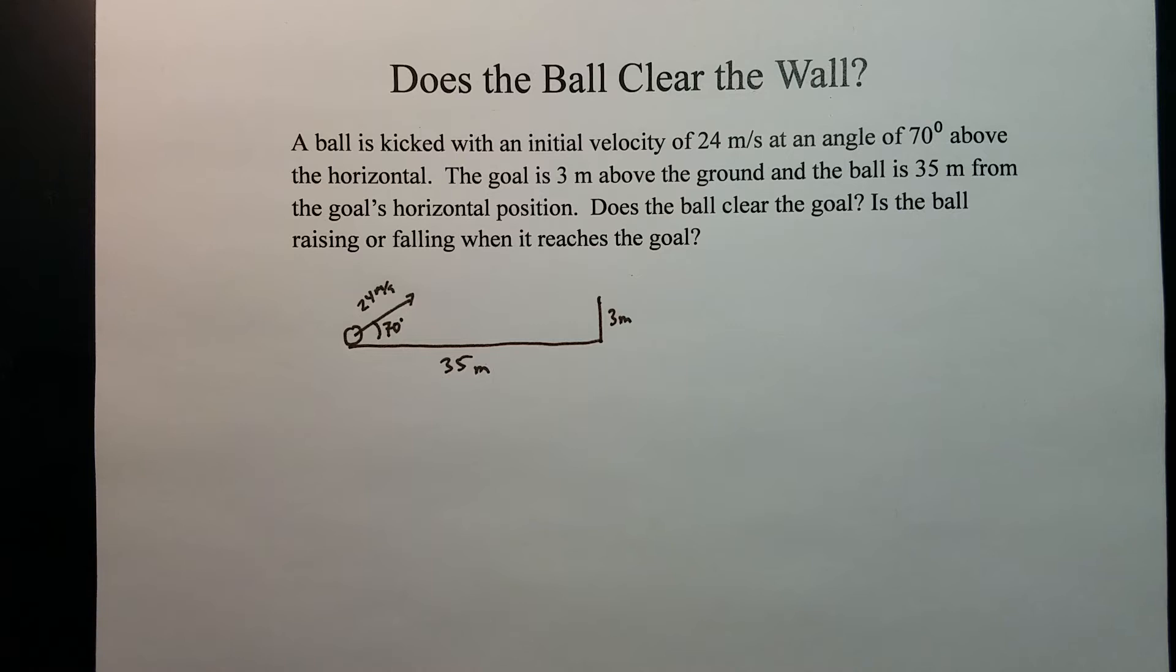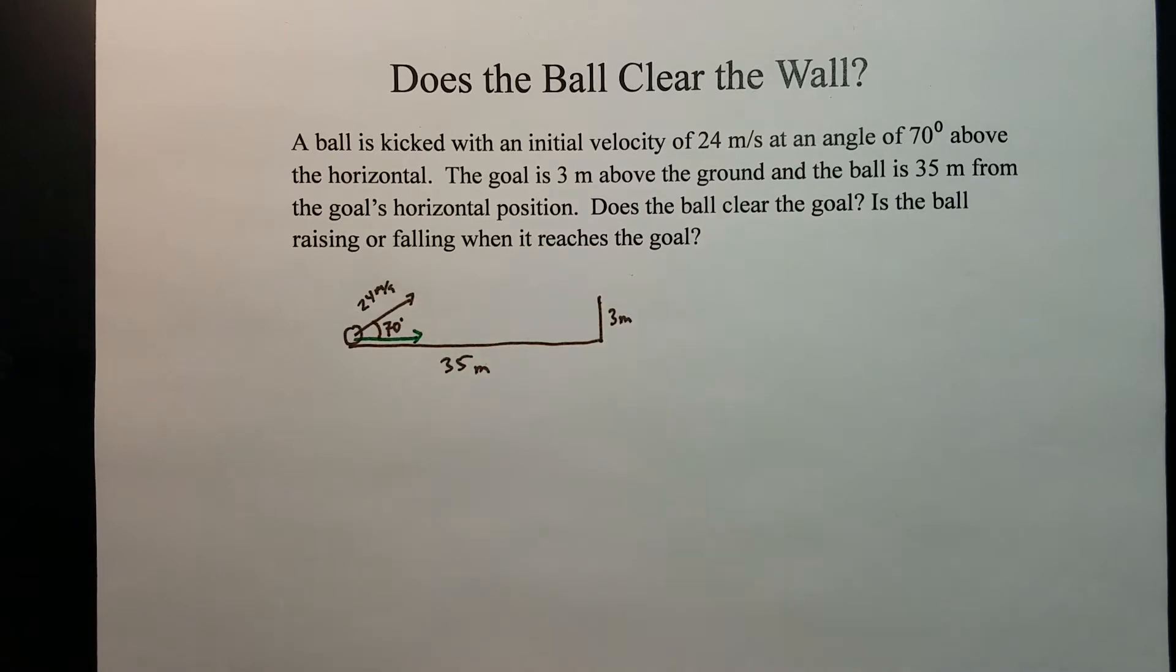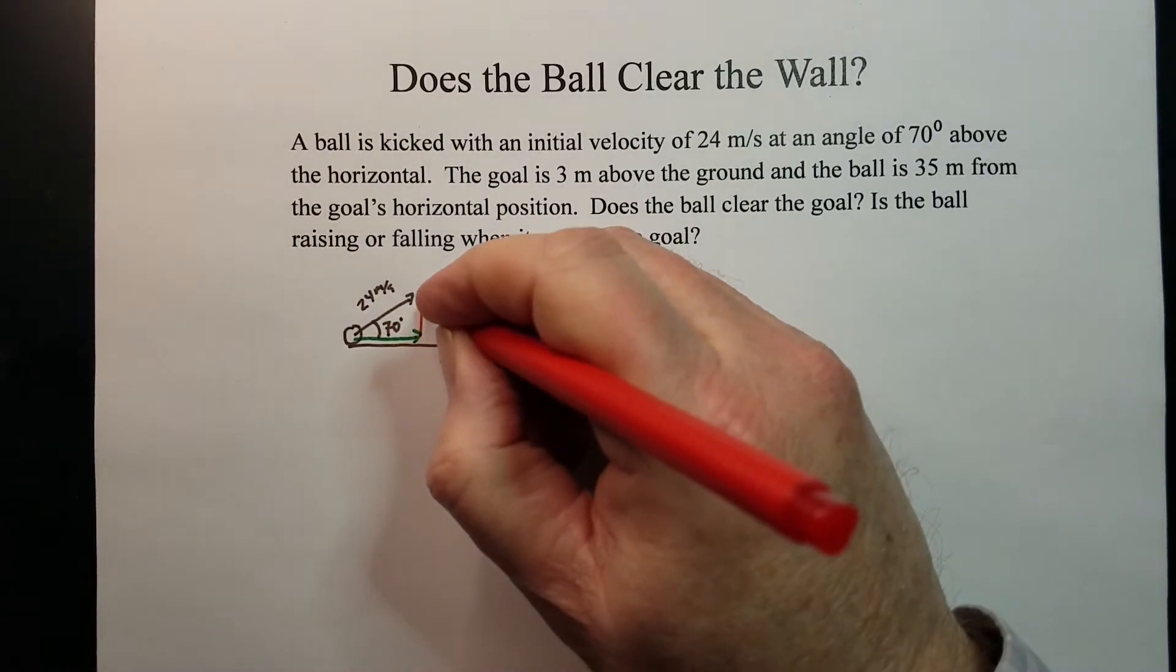It could hit the goal or the wall and fall back down, or it could make the entire flight. So we want to first break this into components: a horizontal component and a vertical component.